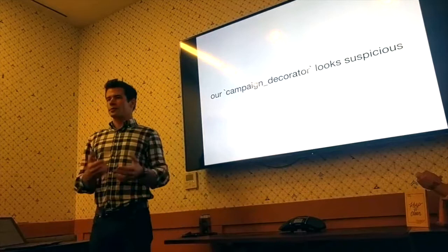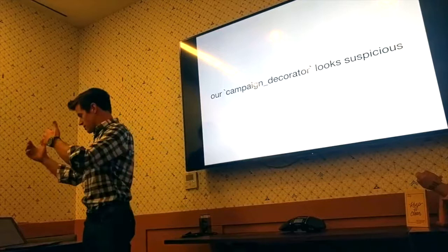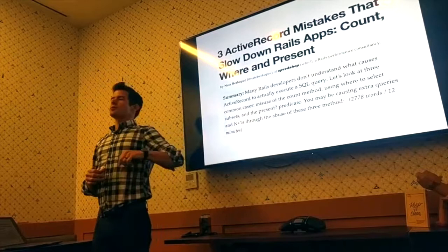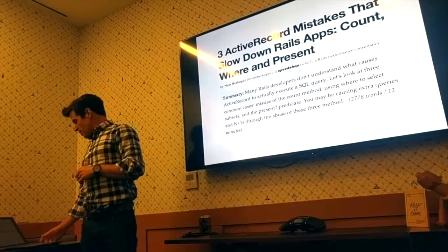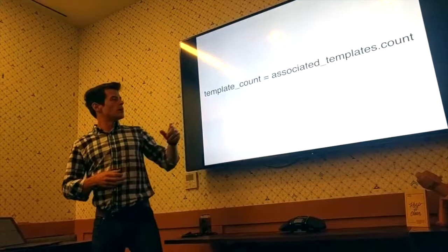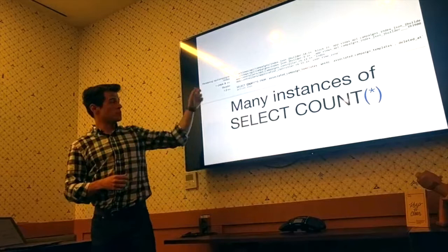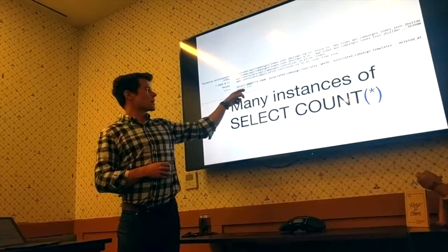As I was looking into it, we have this campaign decorator class. We have a graph that fills up a bunch of campaign data, and it all gets shoveled into this campaign decorator. I started looking through it and remembered an article about active record mistakes that slow down your Rails apps. We had this line of code: template_count equals associated_templates.count. Associated_templates is an active record collection and we're just calling .count on it. If you look through in the Rack Mini Profiler, you can just see the SELECT COUNT(*) all over the place.